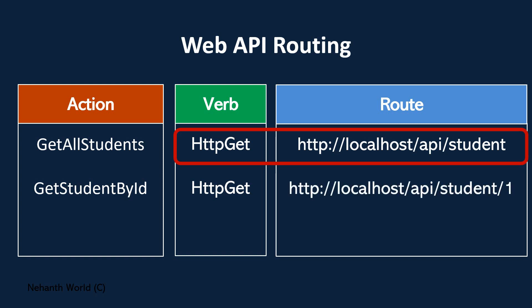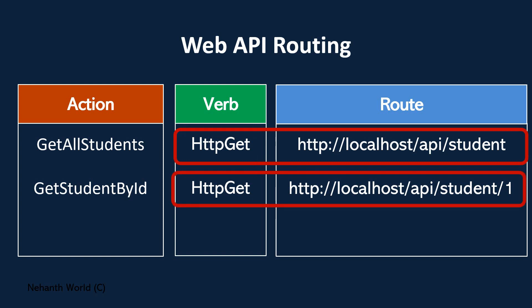The combination of HTTP verb and route should be unique. For 'Get Student By ID', the route is 'api/student/1', which is different from the previous route 'api/student'. When you hit 'api/student' as an HTTP GET call, you get all students. But if you trigger 'api/student/1' with HTTP GET, you get a single student matching that ID. Both are HTTP GETs, but the URI is different.